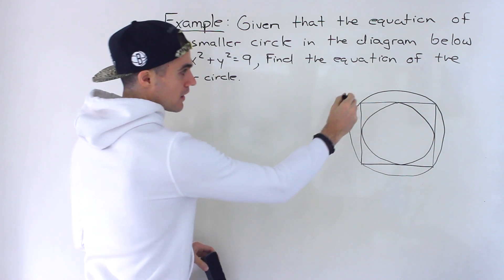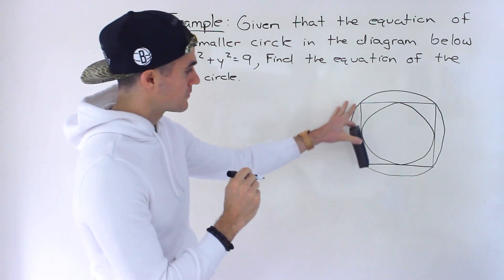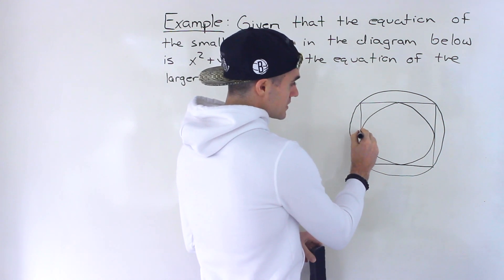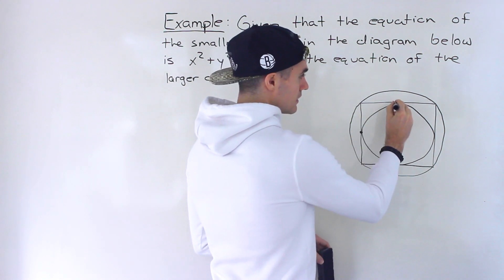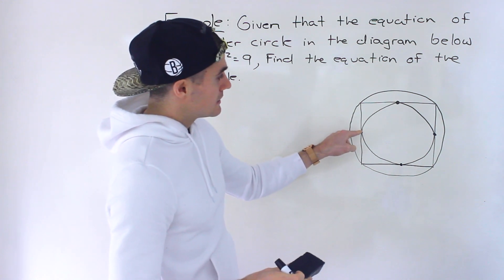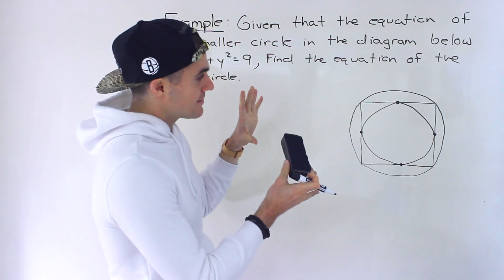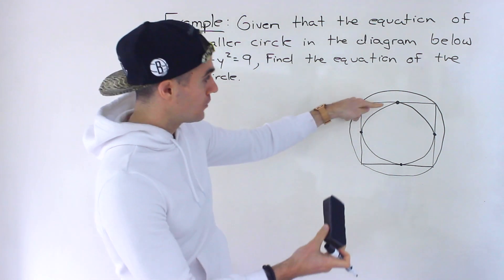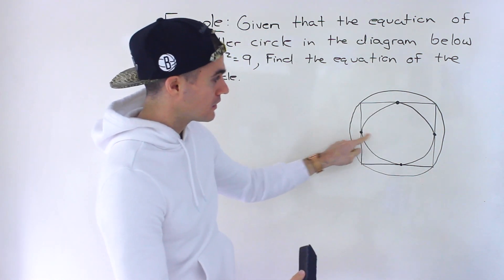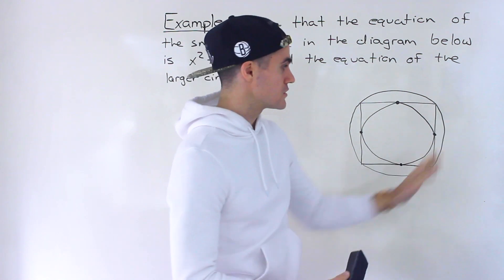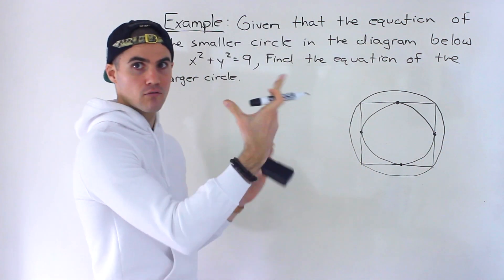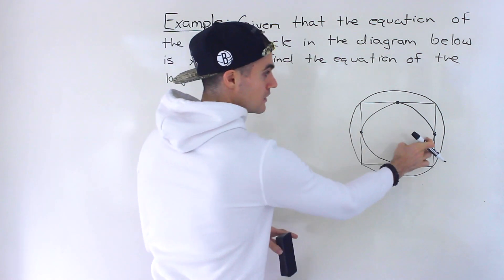We've got a smaller circle, a square, and a larger circle. The reason why this is a square — notice that the smaller circle is touching the square here, here, here, and over here. And it's touching the square at the circle's most outside points: the highest point, the lowest point, the leftmost point, and the rightmost point. It's at the extremes of the smaller circle.